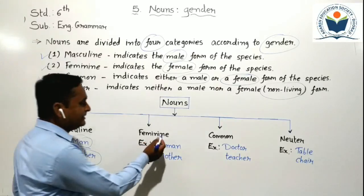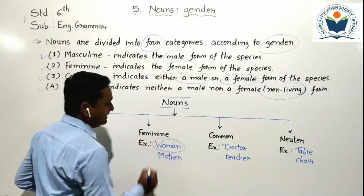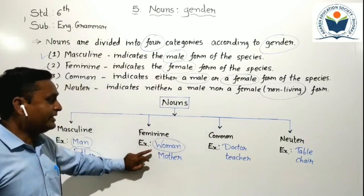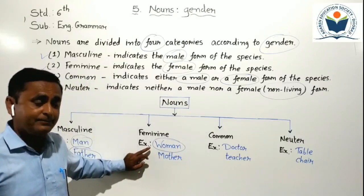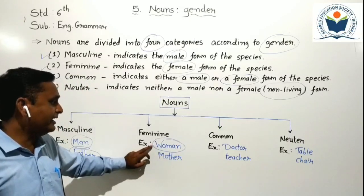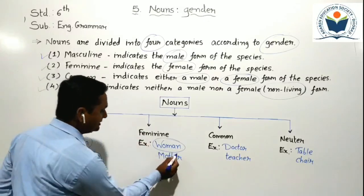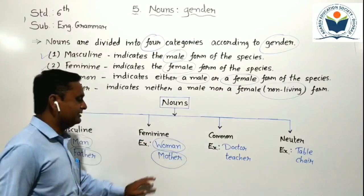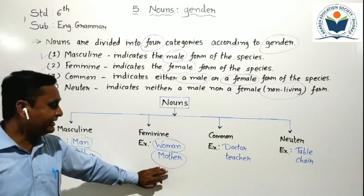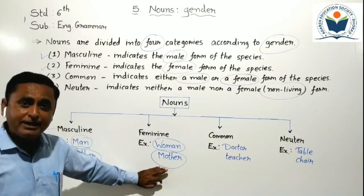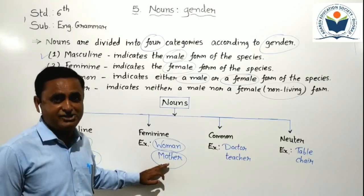Now the second one is feminine gender. For example, woman is written here. The word woman is related to female, so we can say that woman is a feminine gender. Like that, the word mother is written here. Mother is also related to female form, so we can say that mother is feminine gender.